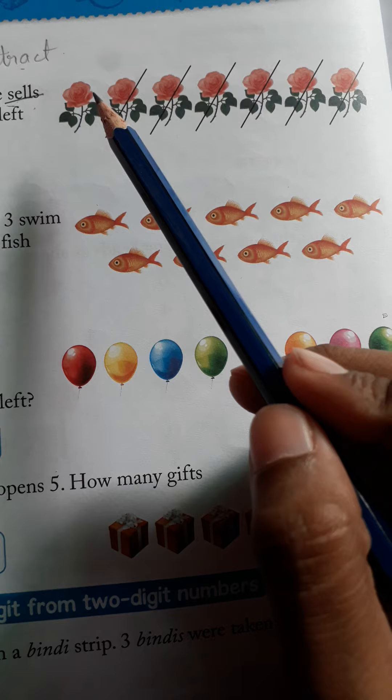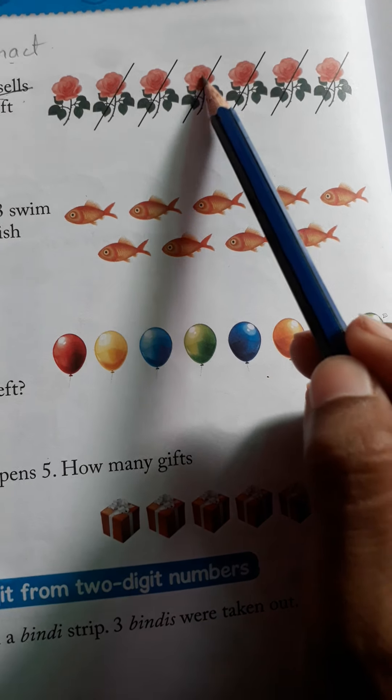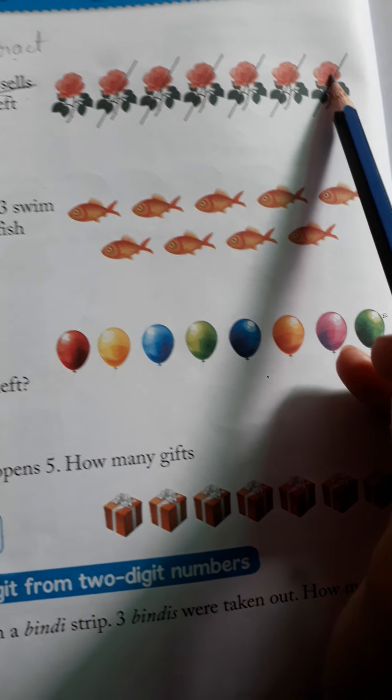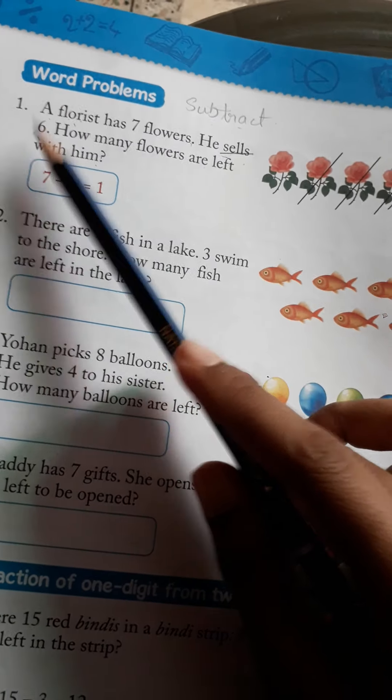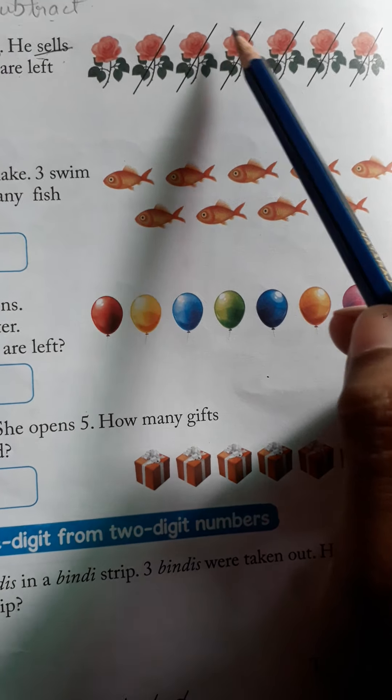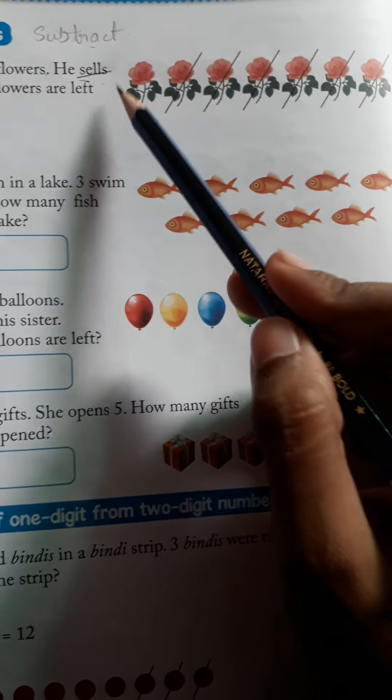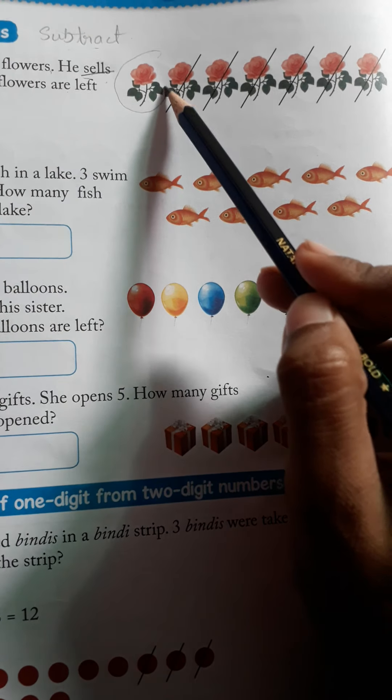Now you see, a florist has 7 flowers - 1, 2, 3, 4, 5, 6, 7. And out of 7, he sells how many flowers? 6 flowers. So see, 1, 2, 3, 4, 5, 6. So how many are left? Only 1 flower left.